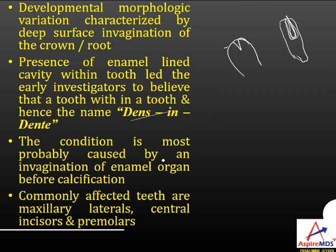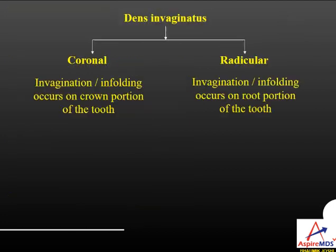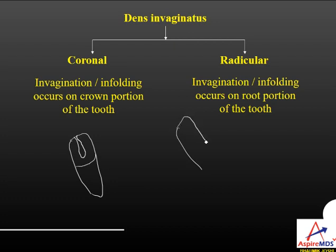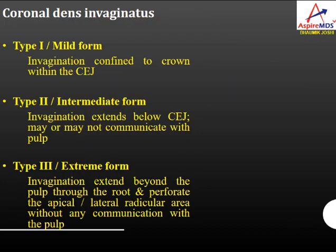Dens invaginatus is most probably caused by invagination of the enamel organ before calcification. Commonly affected teeth include the maxillary lateral incisors, central incisors, and premolars. It can be coronal — where invagination is present in the crown — or radicular — where invagination is present in the root. Coronal dens invaginatus is classified into three types. Class 1 is the mild form where invagination is confined to the crown and remains within the CEJ.